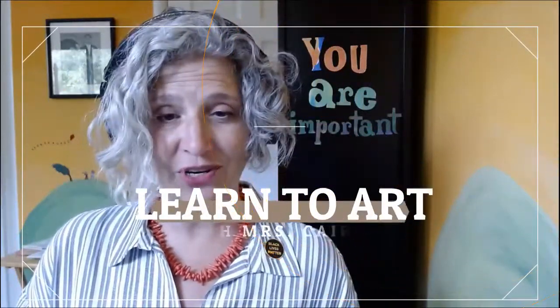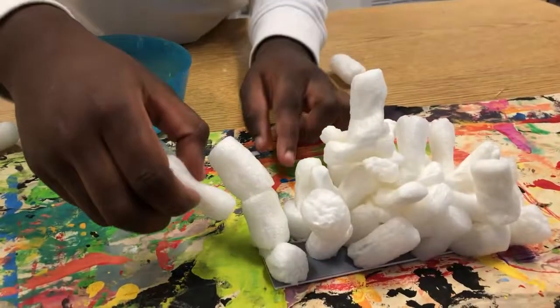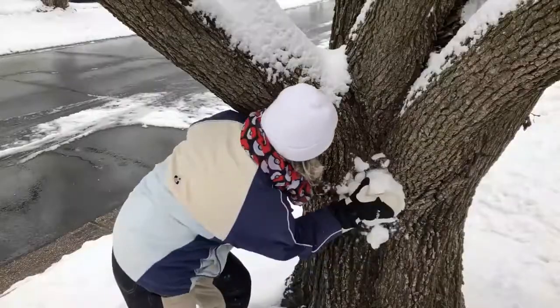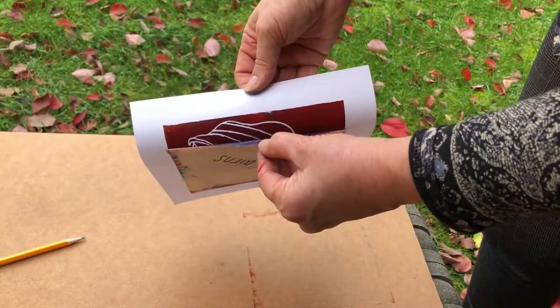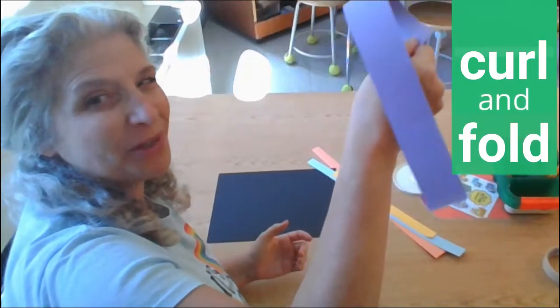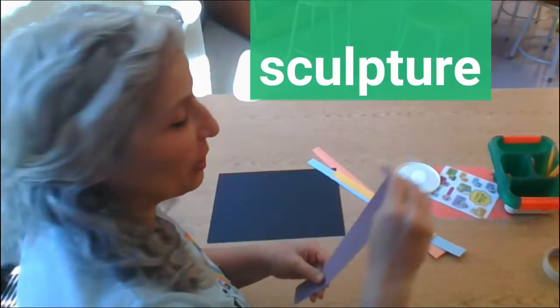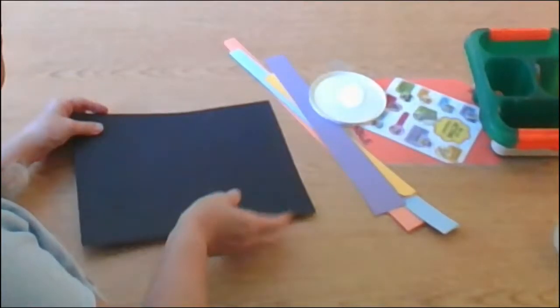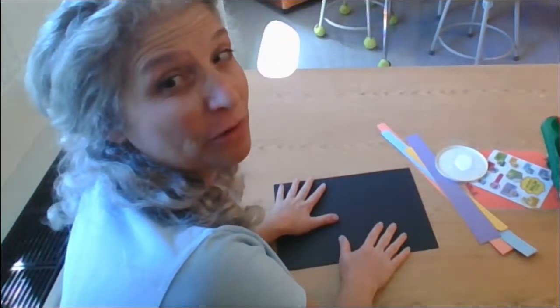Hello, my talented artists. I'm going to show you some ways to curl and fold these paper strips so that we can make a three-dimensional sculpture. Your name should be on the bottom of your sculpture, so be sure to turn over your black paper. This is called the base of your sculpture.